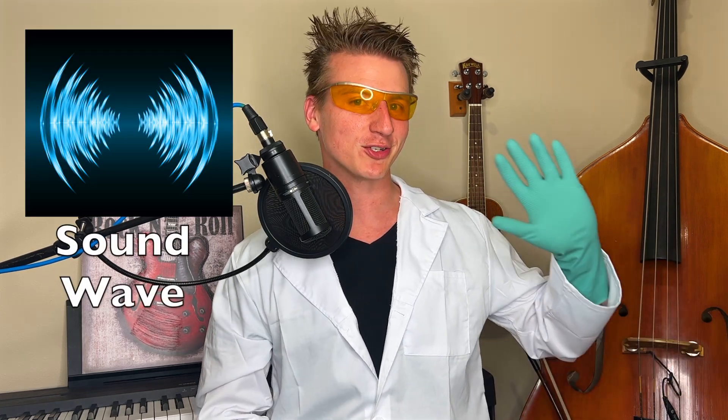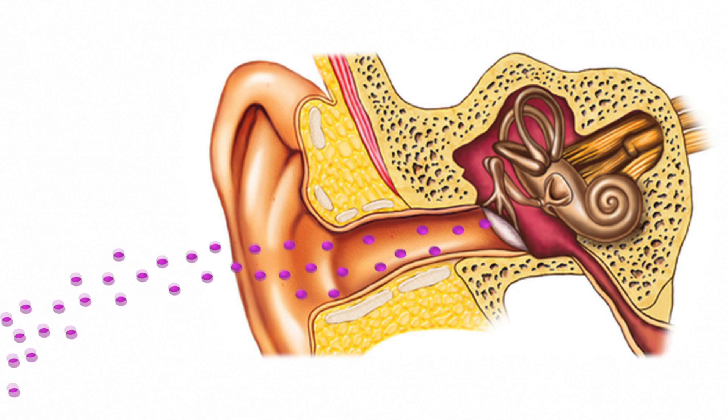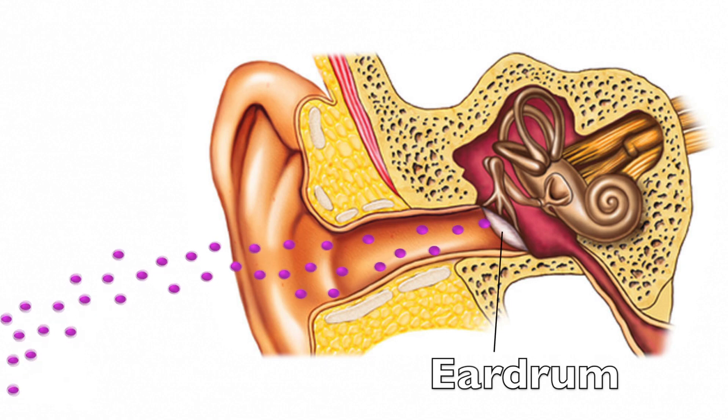If the sound wave reaches your ear, it can go all the way inside to a tiny little organ called an eardrum. And when those molecules get your eardrum vibrating, your brain hears that as a sound. And there you have it, boys and girls — that's how all sound is created through vibration.